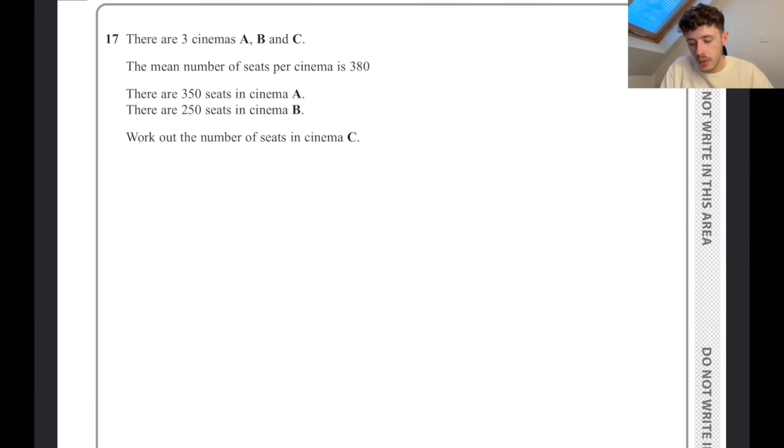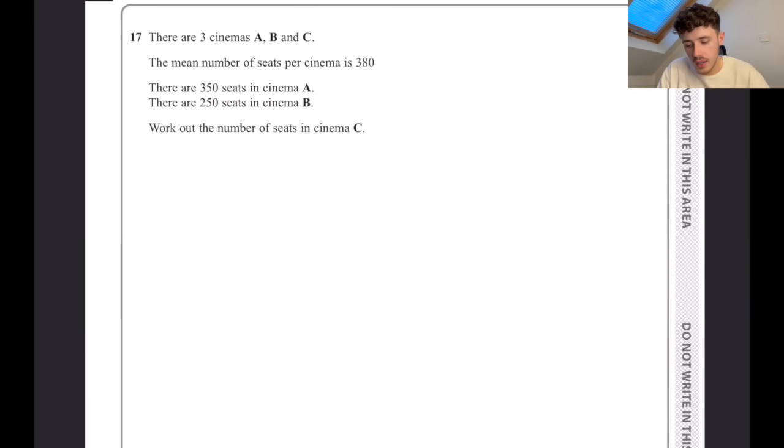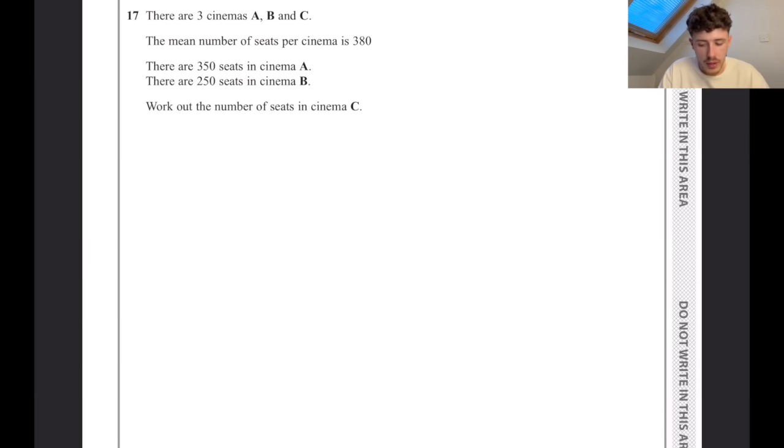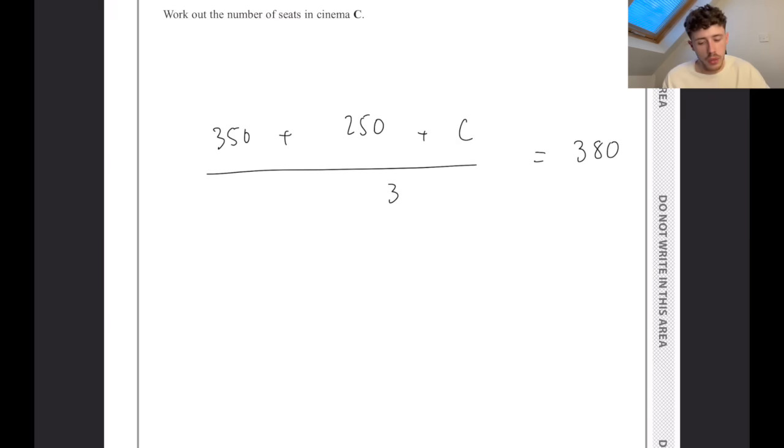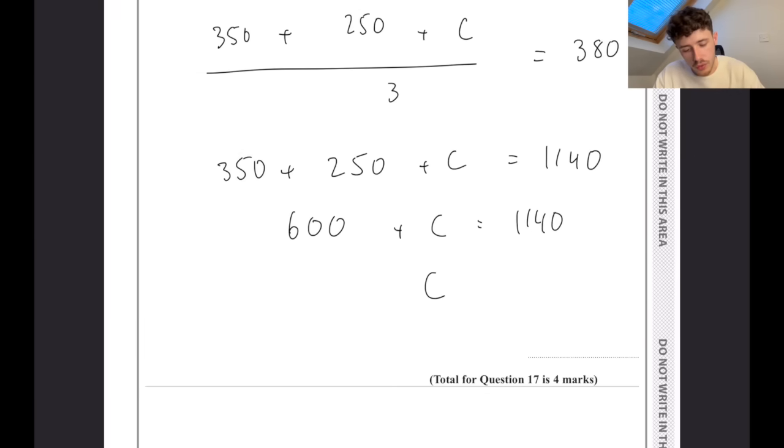There are three cinemas A, B and C. The mean number of seats per cinema is 380. There are 350 seats in A, 250 in B, work out C. This is something called reverse mean. We know that to get that 380 number, you'd have done A plus B plus C divided by three, because when we do mean, we add them up and divide them by how many there are. If we now replace A with 350, B with 250, C is the only unknown. If we reverse the dividing by three, that 380 beforehand would have been 1,140. Next, we can combine the 350 and 250 to make 600. Then if we take away the 600, that leaves us with 540 seats.